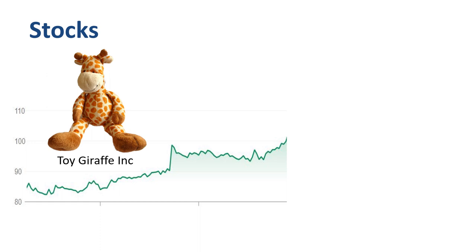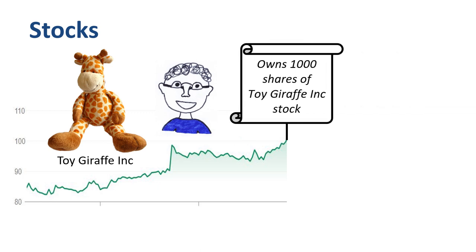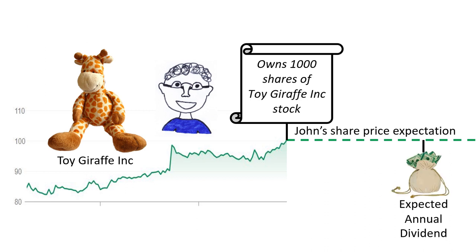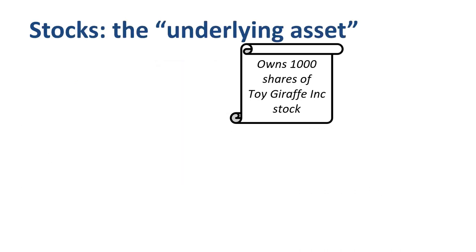The share price has been going up and down in the $80 to $100 range over the past years. Meet John. He recently bought 1,000 shares in Toy Giraffe Inc. at $100 per share. He expects the share price to stay pretty much the same in the future, so no specific expectations on his side of making a return from the share price rising, but he's really excited about the expected annual dividend. When we start discussing financial derivatives, the stocks that John bought are called the underlying asset.